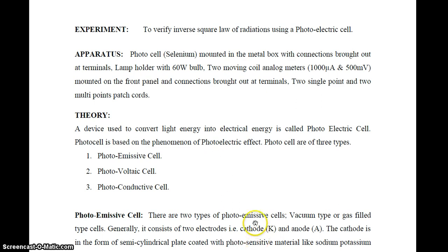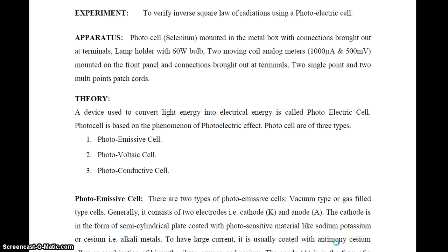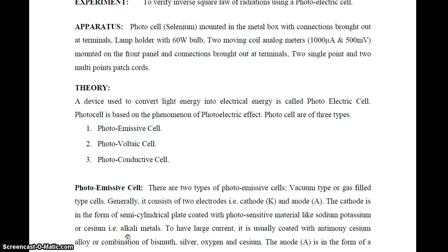There are two types of photoemissive cell: vacuum type and gas-filled type. The photoemissive cell consists of two electrodes — cathode (K) and anode (A). The cathode is in the form of a semi-cylindrical plate coated with photosensitive material like sodium, potassium, or cesium — alkaline metals — whose main function is to produce a large current.